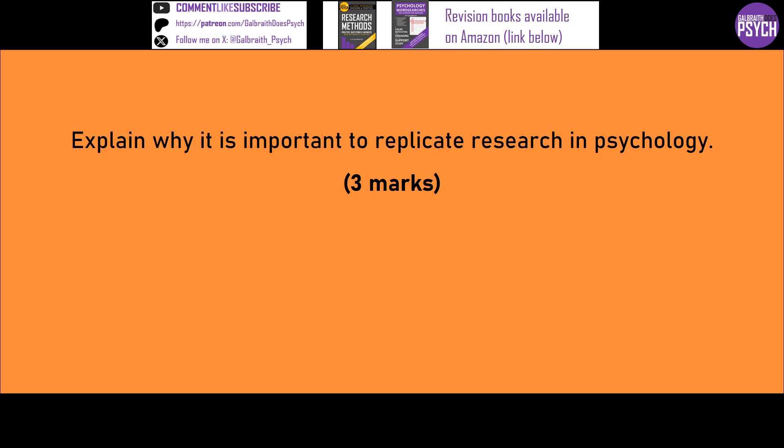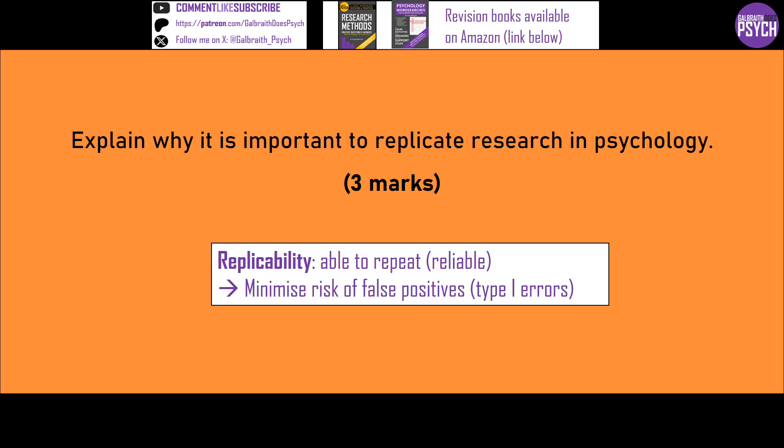Explain why it's important to replicate research. Let's recall the idea of replicability — that's about being able to repeat. You'll get credit for talking about checking the reliability of studies. You might recall the idea of false positives or type 1 errors. One of the standard P levels used in psychology research is the 5% significance level, which means every time we get our data there's potentially a 5% risk that it's a false positive — that we're saying there's a genuine effect when really it was just due to chance. So replication is really important to minimise the risk of those things. That's 1 in 20 studies potentially being a false positive.